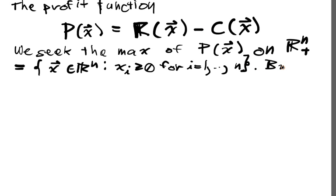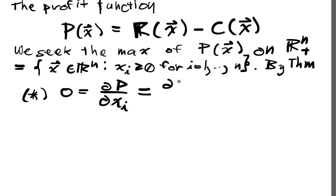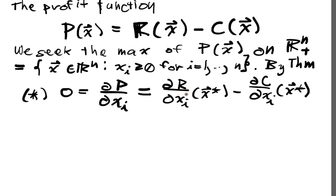Well, by our theorem, the first order conditions, we have to have that at the maximum, 0 equals the gradient or the individual partial derivatives at x_i. And this is going to be dR/dx_i at x* minus dC/dx_i at x*. The marginal of the revenue as I change x is going to have to equal the marginal cost.